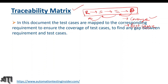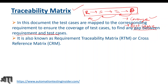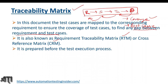In this document, test cases are mapped to their corresponding requirements to ensure coverage and to find any gap between requirements and test cases. It is also known as Requirement Traceability Matrix (RTM) or Cross Reference Matrix (CRM). It is prepared before the test execution process. We have three types: forward traceability matrix, done before execution; backward traceability matrix, done after execution; and bi-directional traceability matrix.